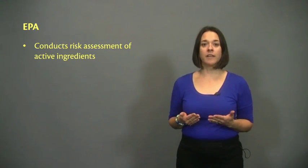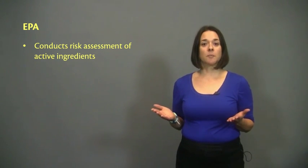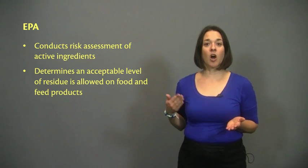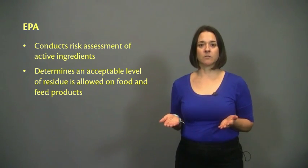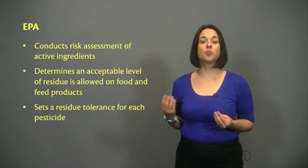EPA uses all the information gathered during the risk assessments to determine an acceptable level of pesticide residue that can be allowed on food and feed products or commodities, and sets a residue tolerance for each one of them.